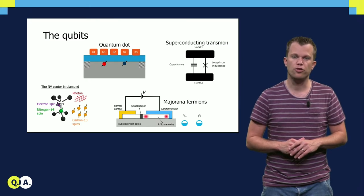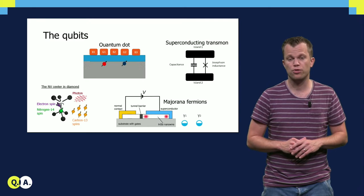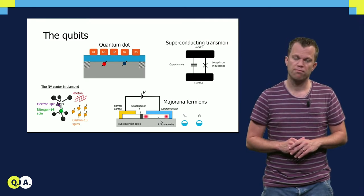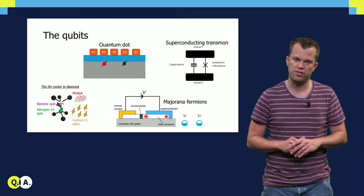A special class of qubits exists that can be made intrinsically insensitive to some noise. These are called topological qubits, and are qubits such as the ones based on emergent Majorana-Fermion states.